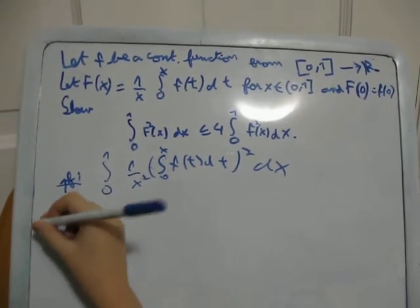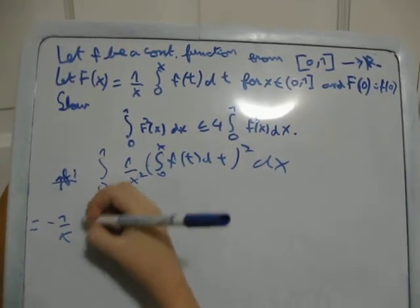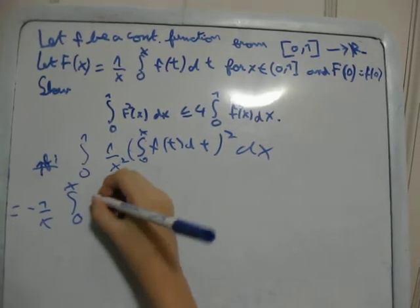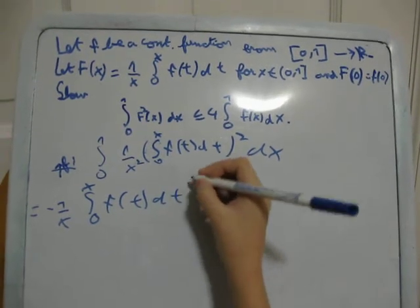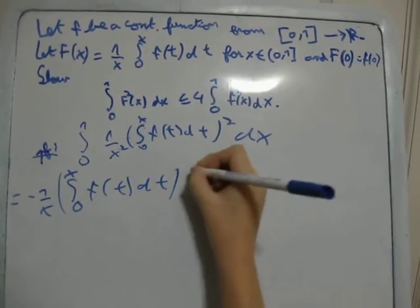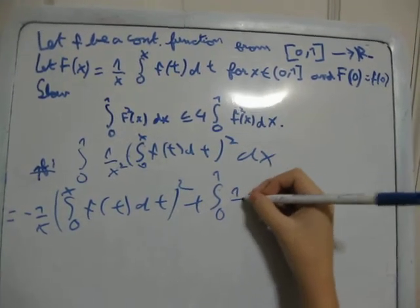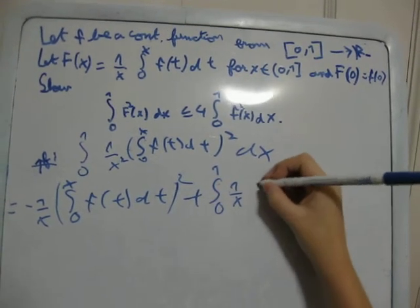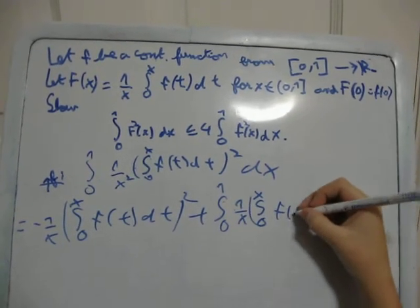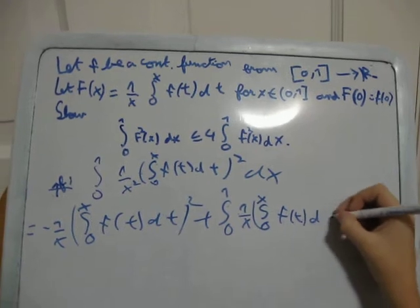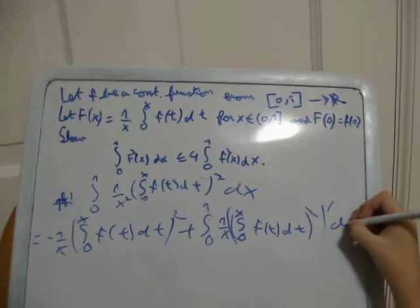Then we could apply integration by parts. It would have minus 1 over x times the integral from 0 to x of f of t dt, plus the integral from 0 to 1 of 1 over x times the integral from 0 to x of f of t dt squared, all this prime dx.